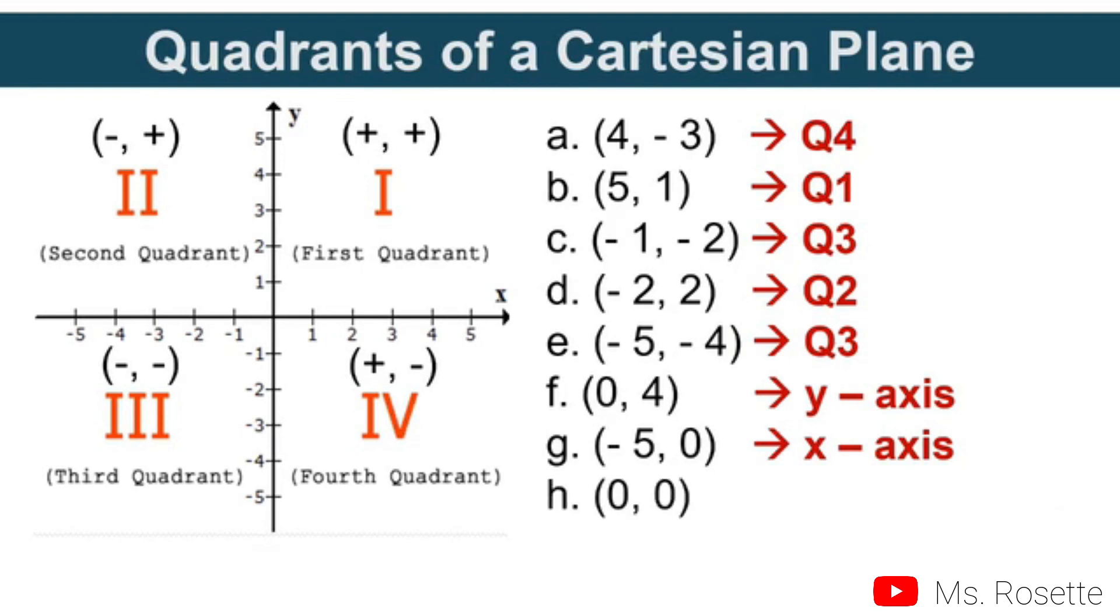Last example: (0, 0). Both coordinates have no sign. In what quadrant can we find this one? They do not belong to any quadrant. Instead, it is in the middle, so we call it the origin.